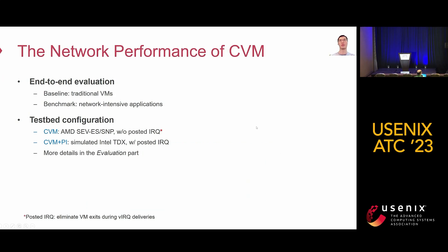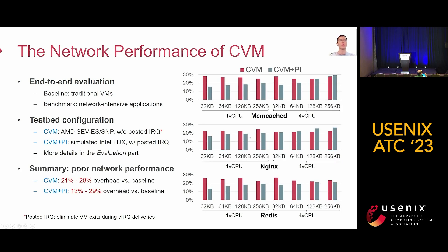Next, we evaluate the end-to-end network performance of CVMs. We use network I/O intensive applications as benchmarks and take traditional VMs as a baseline. We denote the AMD SEV VM without posted interrupt as CVM, and denote the simulated Intel TDX VM with posted interrupt as CVM plus PI. Posted interrupt is a hardware feature that can eliminate VM exits during virtual interrupt deliveries. As shown in the figure, both CVM and CVM plus PI have poor network performance. Compared to their baseline, the overhead can be up to 30%.